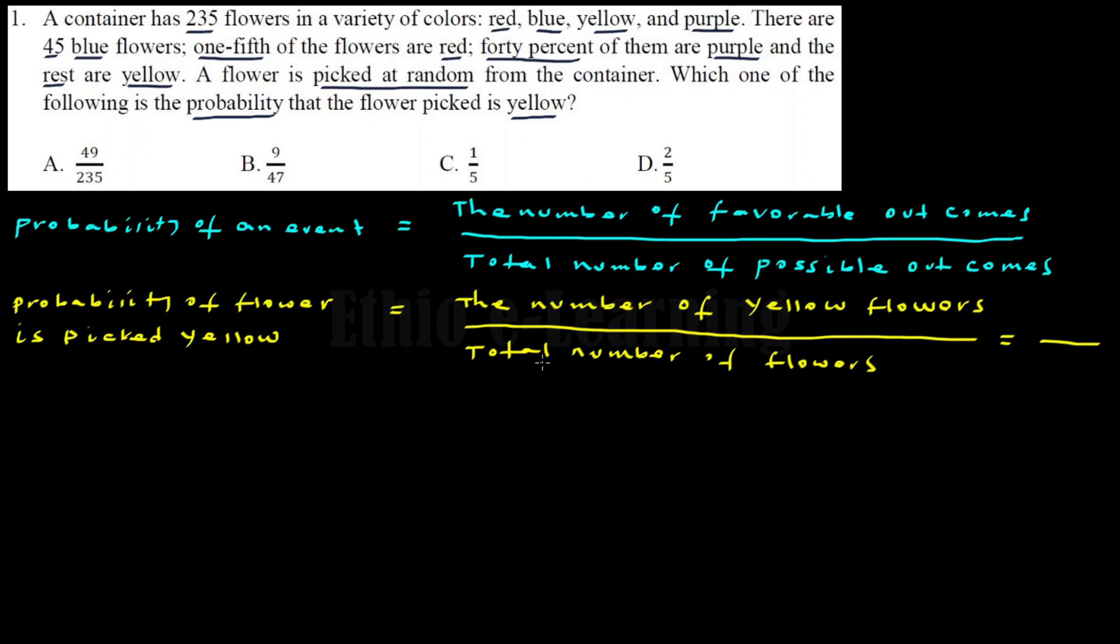The total number of flowers in the container is 235. There are 45 blue flowers. One-fifth of the flowers in the container are red.